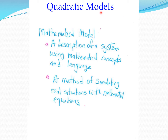First of all, what do we mean by a model or a mathematical model? A mathematical model is a description of a system using mathematical concepts and language. We could also view it as a method of simulating real situations with mathematical equations.